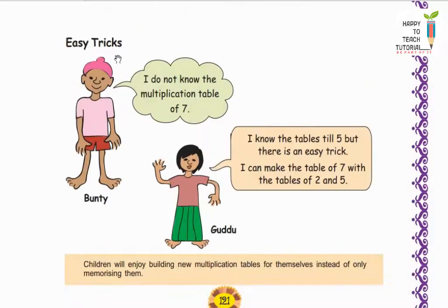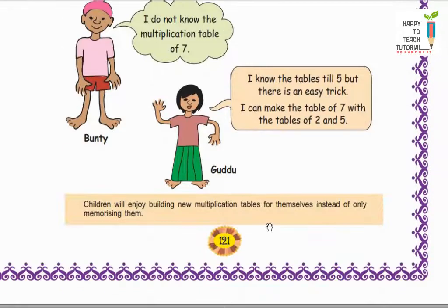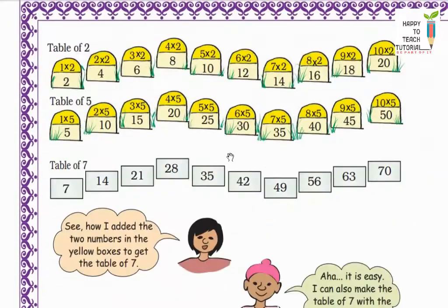Now next is easy tricks. I do not know the multiplication table of 7. So Banti is saying that he doesn't know the multiplication table of 7. Guddu says I know the tables till 5, but there is an easy trick. I can make the table of 7 with the tables of 2 and 5. Let's see how Guddu makes the table of 7.